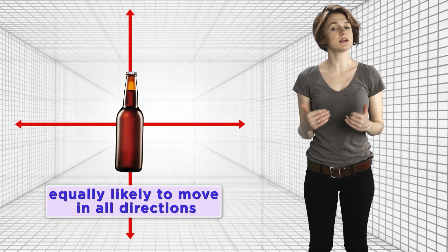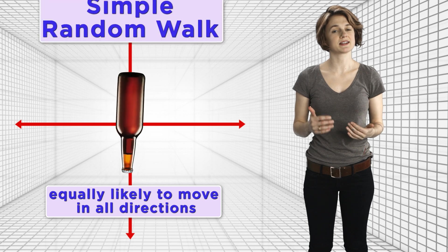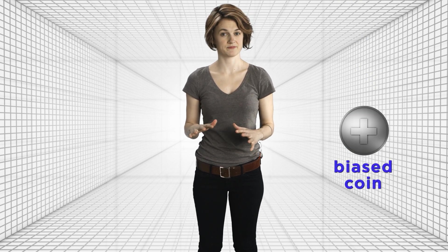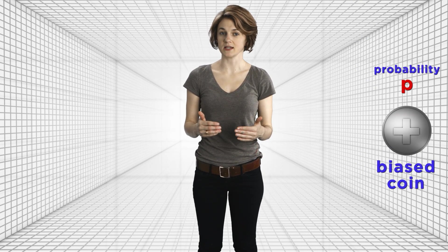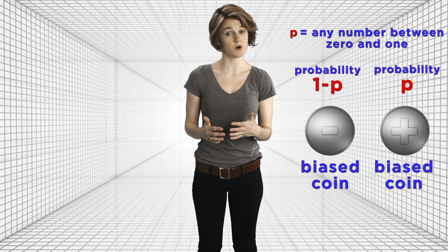The drunk man has no preferential direction—he's equally likely to move in all directions. We call that a simple random walk. But in general, a random walk can have a bias or a preferential direction. Let's look at this in one dimension. Now, instead of flipping a fair coin, you're flipping a biased coin. It has probability p of landing on plus and probability 1 minus p of landing on minus, where p is some number between 0 and 1.